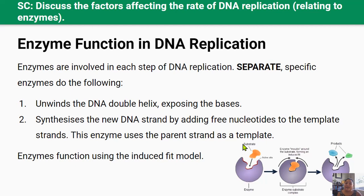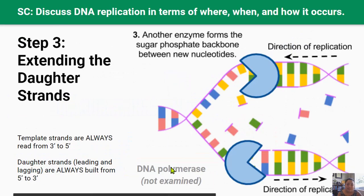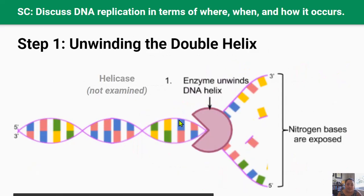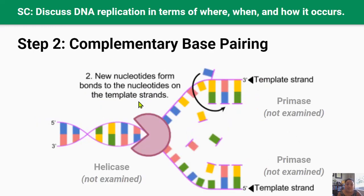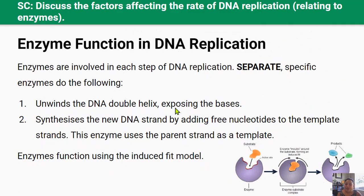What do you need to know about enzyme function during DNA replication? Enzymes are involved in each step of DNA replication. You don't need to know the names of these enzymes, but you need to know that at each step different enzymes are working. There's a specific enzyme that unwinds the DNA double helix, exposing the nucleotide bases. There's another enzyme that makes the new daughter DNA strands by adding free nucleotides to the template. And there's also DNA polymerase, which uses the bases of the parent template strand as a complementary template, matching bases with the complementary base pairing rule — A with T and C with G.